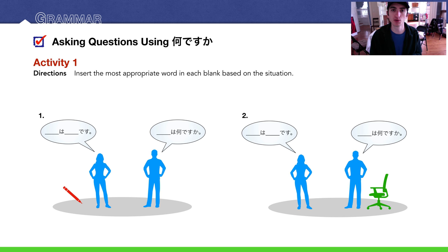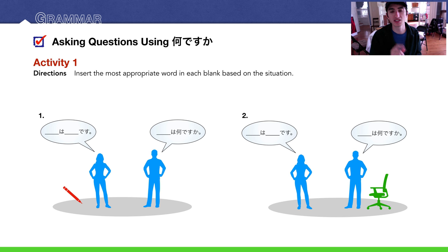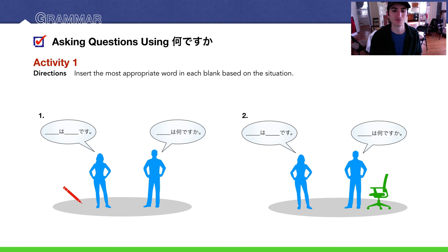Activity one: insert the most appropriate word in each blank based on the situation. Watch out for who is saying what and where the object is. Number one: the man is asking — we know because his sentence ends with か. The pencil is far from him, so he uses それ: それは何ですか？ She replies with これ because it's close to her: これはえんぴつです.